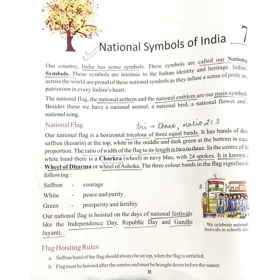National flag. Our national flag is a horizontal tricolor of three equal bands. It has bands of deep saffron (kesaria) at the top, white in the middle and dark green at the bottom in equal proportion. The ratio of the width of the flag is 2 to 3. In the center of the white band, there is a chakra wheel in navy blue with 24 spokes, known as the wheel of Dharma or wheel of Ashoka. The three color bands signify: saffron — courage; white — peace and purity; green — prosperity and fertility.